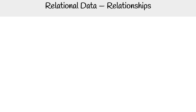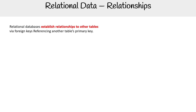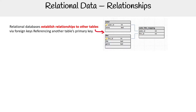For relational data, we have tables and then the relationships between the tables. Relational databases establish relationships to other tables via foreign keys, referencing another table's primary key.